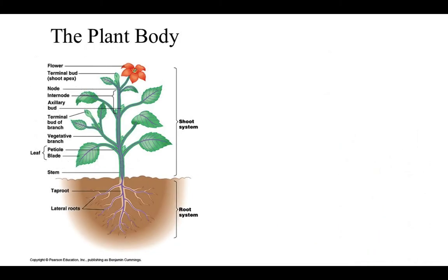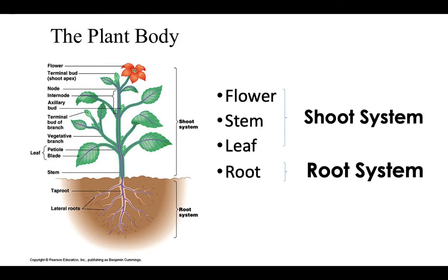A typical terrestrial plant body has a shoot system and a root system. The shoot system is composed of the flower, eventually the fruits, the stem, and the leaf — generally anything found above ground. In the root system, anything subterranean in nature. The organs in the shoot system are derived from the active division of the shoot apical meristem (SAM), while the organs in the root system are derived from the root apical meristem (RAM).